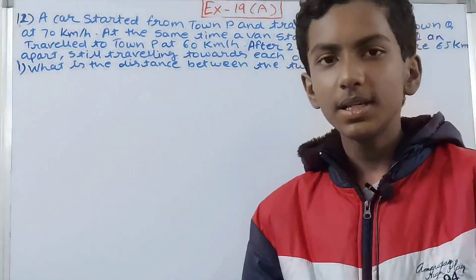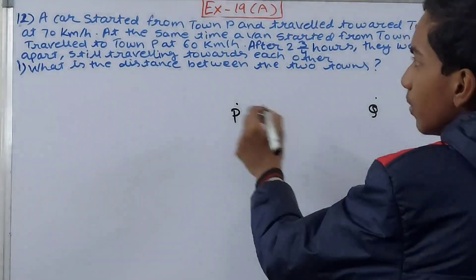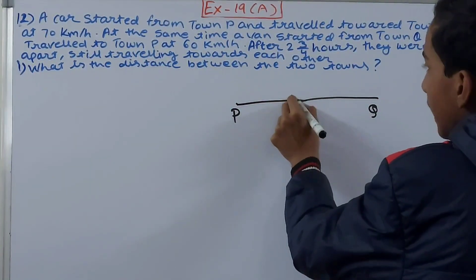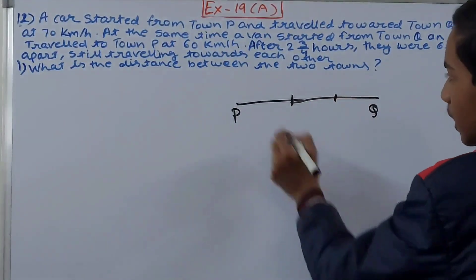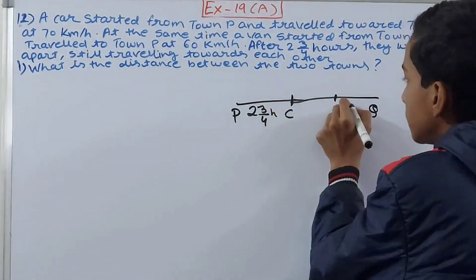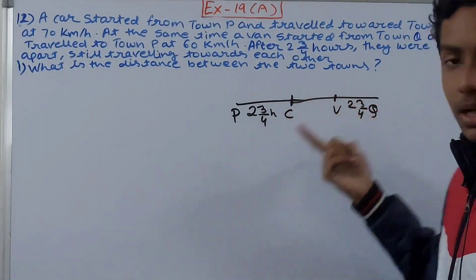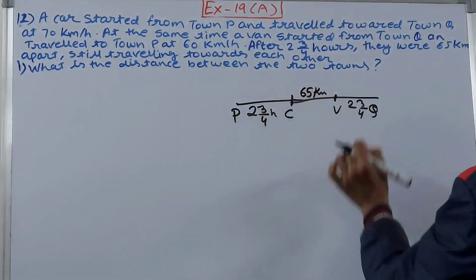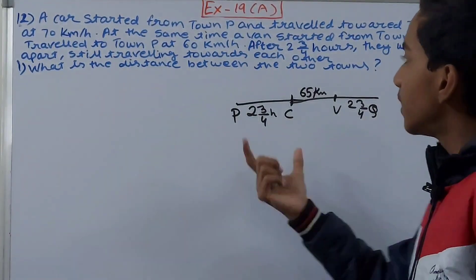We need to find the distance between the two towns. There are two towns: town P and town Q. The car starts from town P toward town Q, and the van starts from town Q traveling toward town P. After 2¾ hours, both have traveled some distance but are still 65 kilometers apart from each other — meaning they still need to cover 65 more kilometers before passing each other.